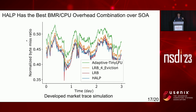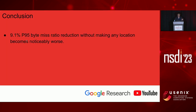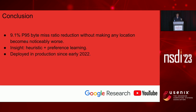Therefore, HELP has the best byte miss ratio to CPU overhead combination over state-of-the-art. To conclude, HELP consistently reduces our production P95 byte miss ratio by 9.1% without making any location notably worse. What enables it is our insight of combining heuristic with preference learning. HELP has been deployed in production since early 2022. With that, I would like to conclude my talk and take questions. Thank you.